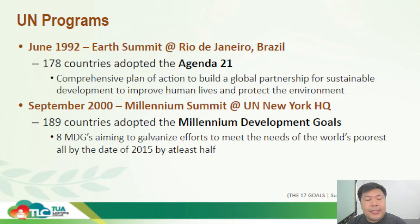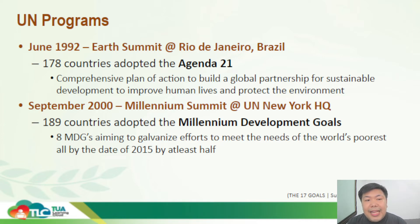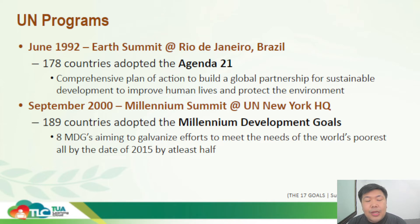In September 2000, they met again at the UN headquarters in New York in the Millennium Summit, attended by 189 countries. There they drafted and adopted the Millennium Development Goals. There are eight MDGs, whose efforts aim to meet the needs of the world's poorest. Please remember that MDGs aimed to help only developing nations, wanting to reduce statistics by at least half by the date 2015.